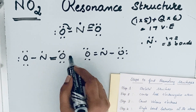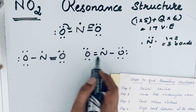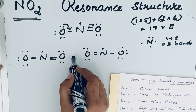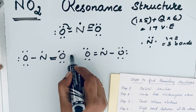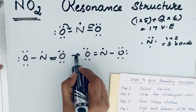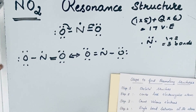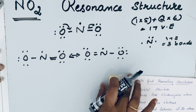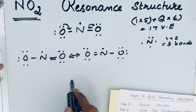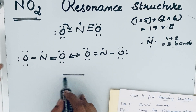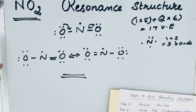So this is the resonating structure. No other structures are possible. These are the two resonating structures of NO2, and they can be shown connected by a double-headed arrow. Thanks for watching.